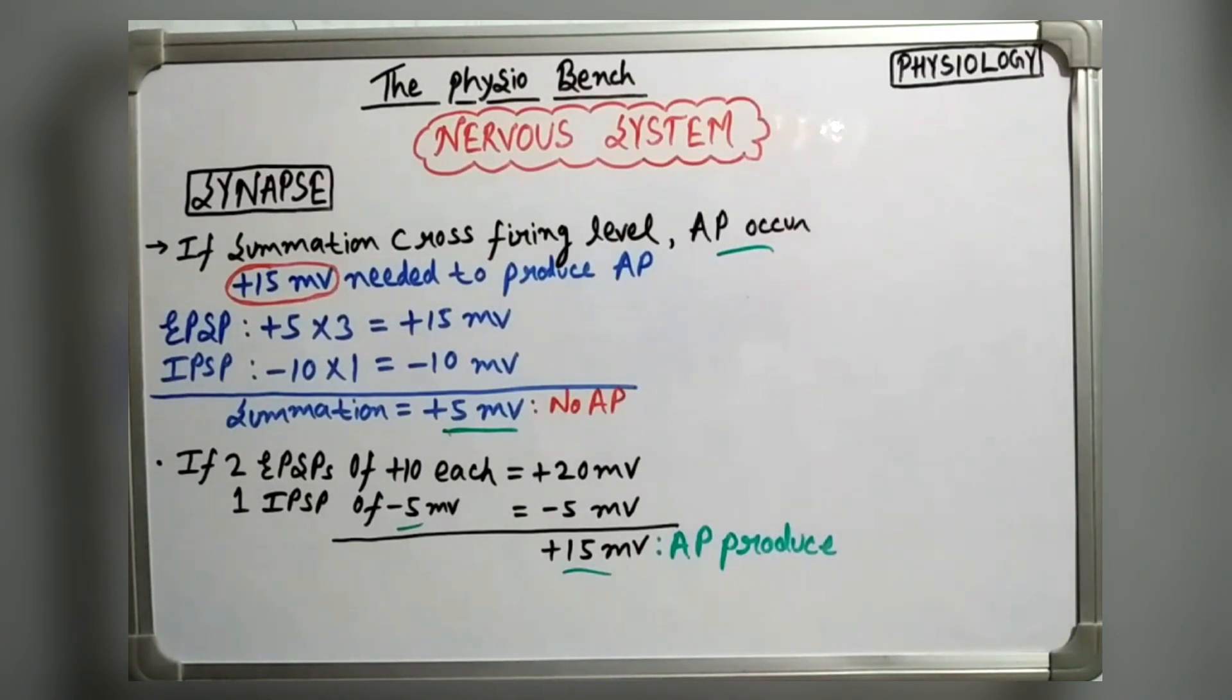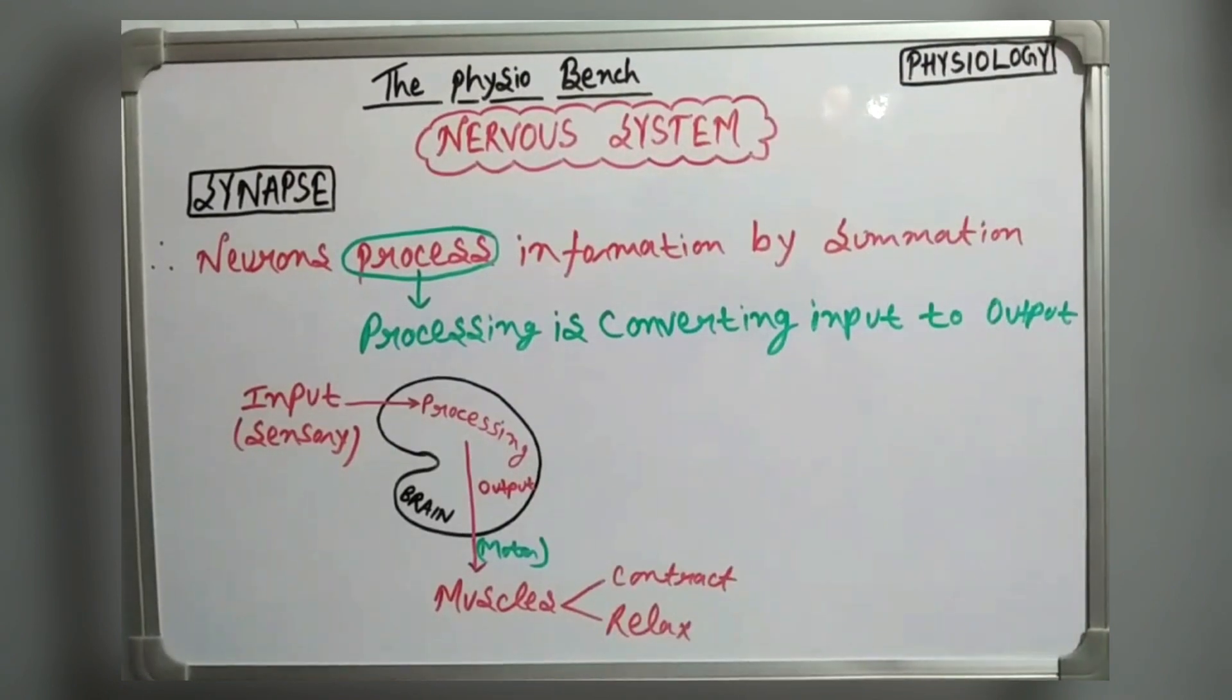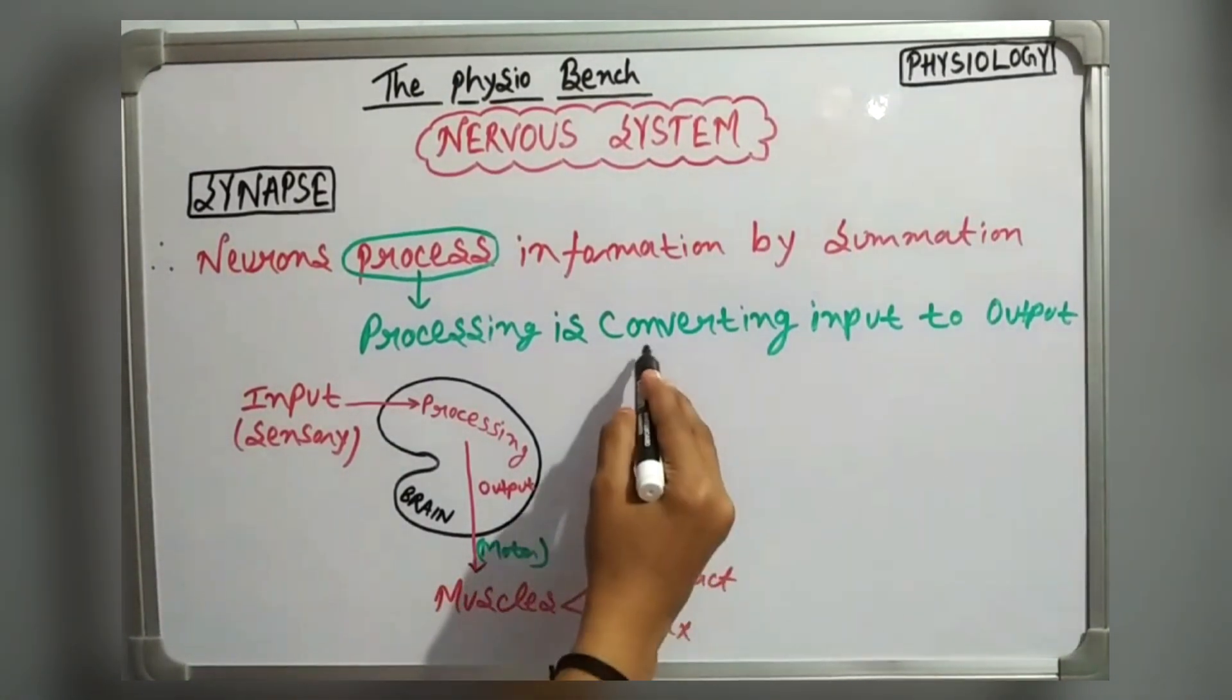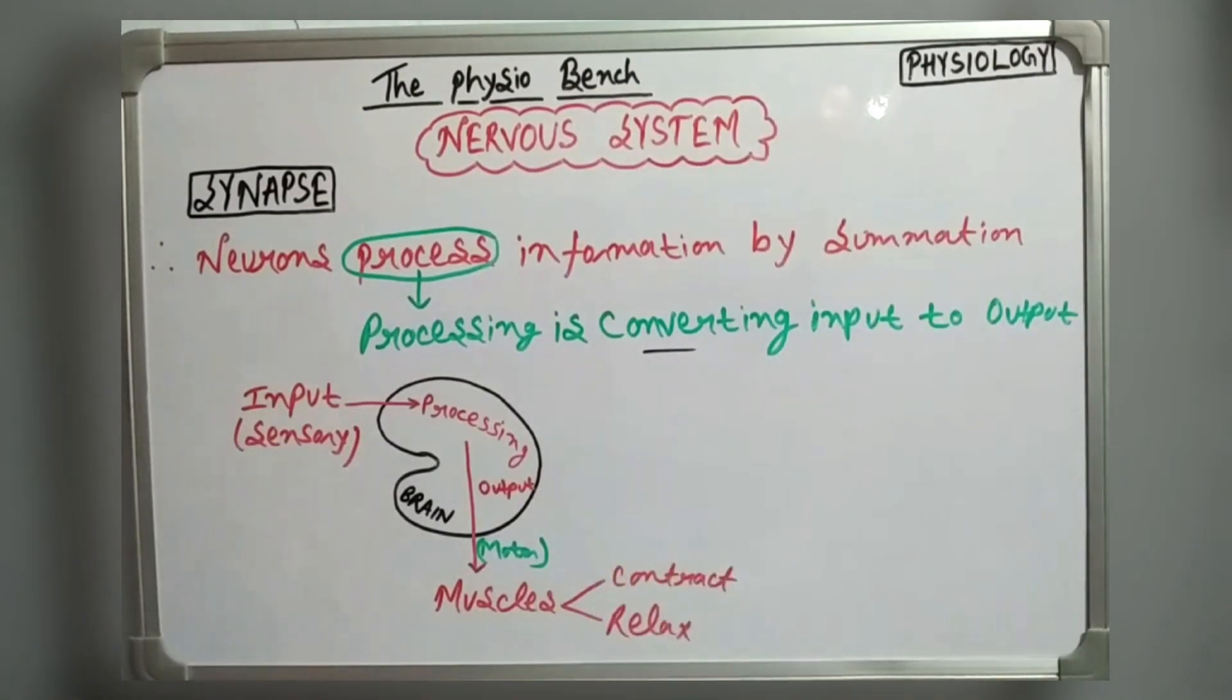So this was the concept of summation. Thus, neurons process information by summation. And what is processing? Processing is converting input to output. I have shown you in the diagram that the input has been processed in the brain, then the output is produced. So what will the muscles do? They will contract or relax.